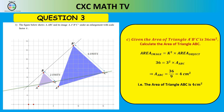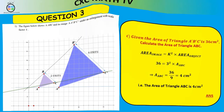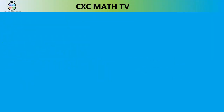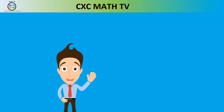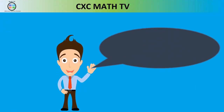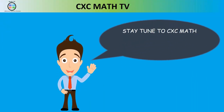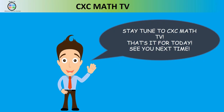Remember that formula: area of image equals K squared times the area of the object. That's it for today. See you next time, have a blessed day, and remember to keep on practicing.